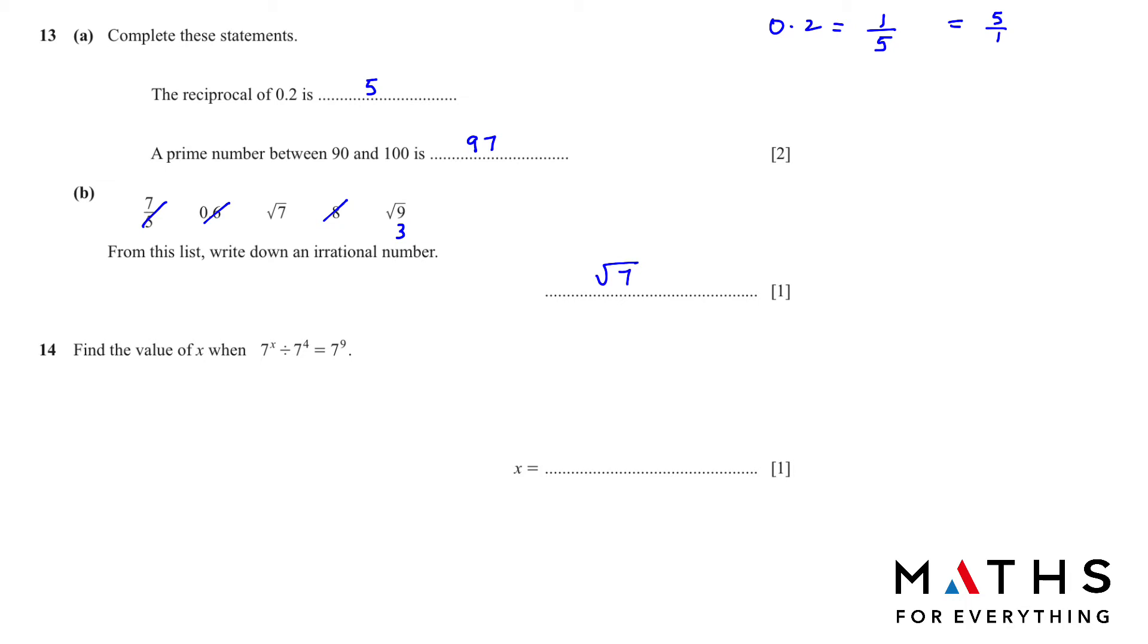Question number 14: Find the value of x when 7 to the power of x divided by 7 to the power of 4 equals 9. A very easy question. Whenever you divide, it means you subtract the power, so x minus 4 equals 9. x equals 9 plus 4. When we shift to the other side, it's going to be positive, so the answer is 13. x is equal to 13.